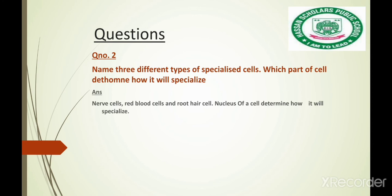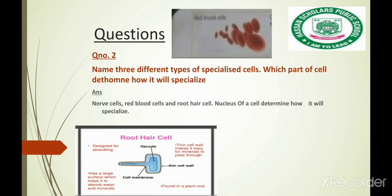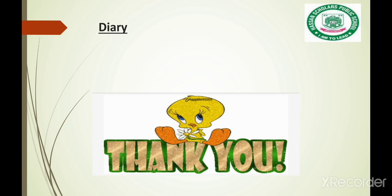Root hair cells are used for absorption of water and minerals in plants. Thank you.